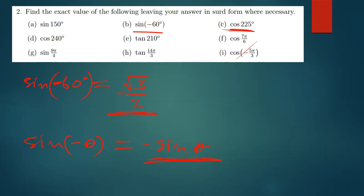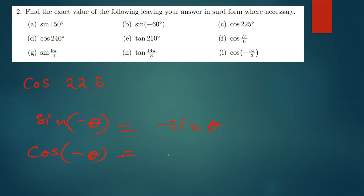Also note that for cosine, the rule is different: cos(−θ) = cos(θ), so the negative inside does not change the sign for cosine. Now let's move on to cos 225°.